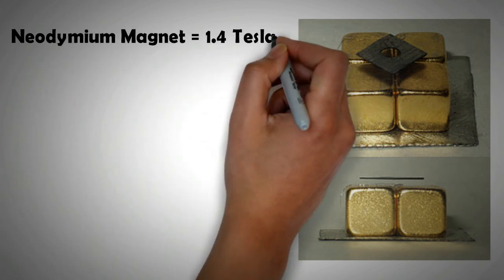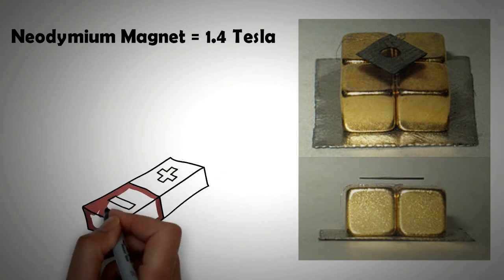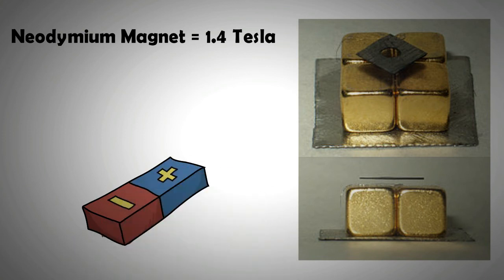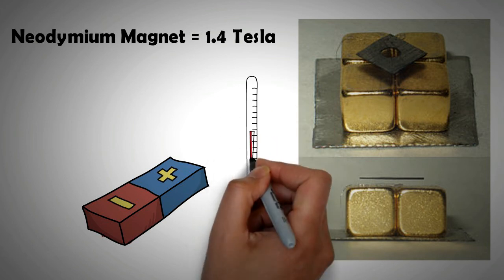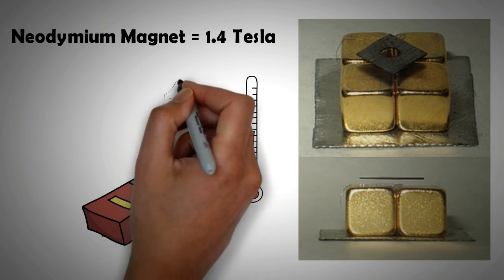It should be noted that neodymium magnets can achieve magnetic field strength of more than 1.4 Tesla, and magnetic levitation using strong diamagnetic materials such as pyrolytic carbon can be carried out in the presence of rare earth magnets such as neodymium magnets at room temperature.